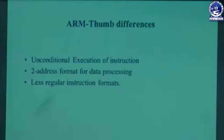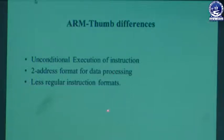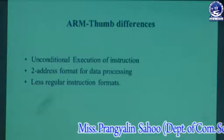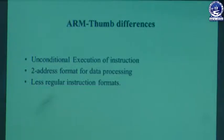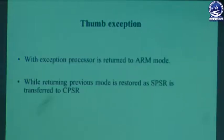Differences between ARM and thumb instructions: thumb instructions support unconditional execution (no condition constraints), while ARM instructions compulsorily contain 3 condition bits; thumb instructions use a two-address format for data processing, while ARM uses three address fields; and thumb instructions use a less regular instruction format with some opcodes used very rarely.